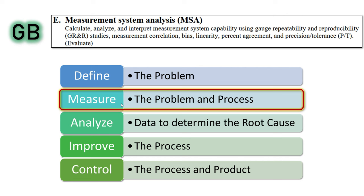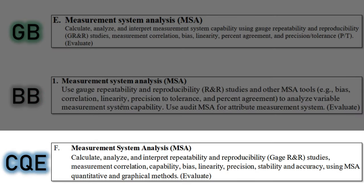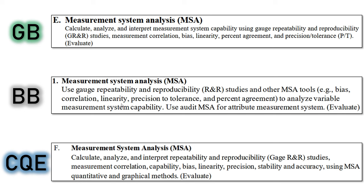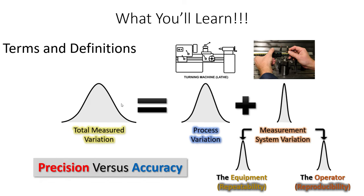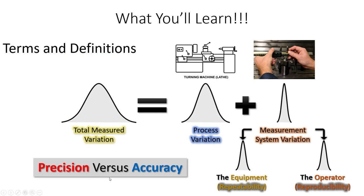Today's video is not just for Greenbelt exam takers — it's also for people preparing for the Blackbelt exam or the CQE exam. I had everybody in mind because I wanted to help as many people as possible. In terms of today's video, we're going to cover the key terms and definitions and basic concepts within gauge R&R: what is measurement system variation, what is repeatability and reproducibility, and how do those tie into important measurement terms like precision and accuracy? All of that — the fundamentals — is today.